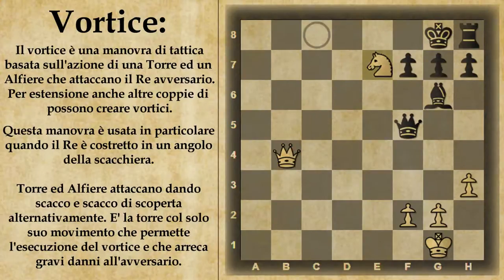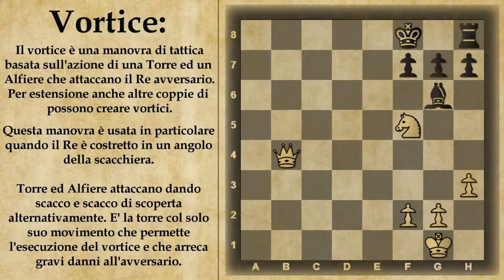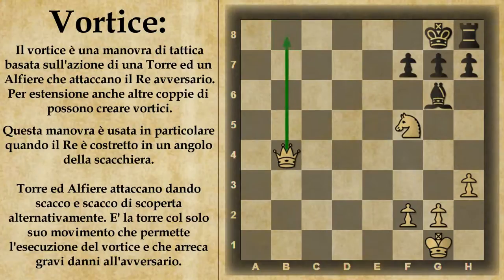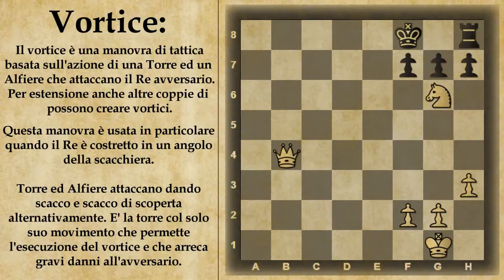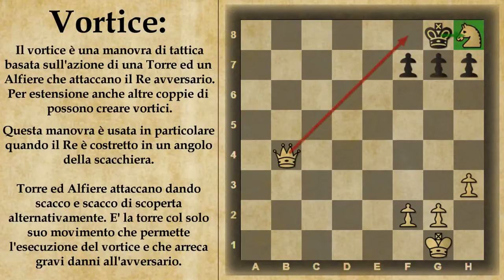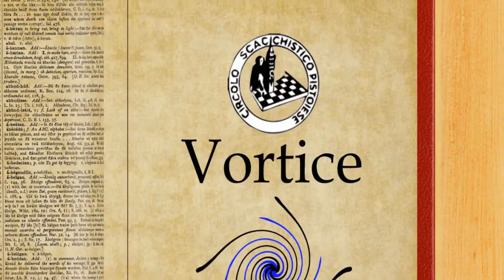Per risolvere questo problema il bianco dà uno scacco di scoperta con il pezzo mobile del vortice, in questo caso il cavallo, atto a rimuovere questa minaccia. Anche qui o il nero muove il re oppure frappone la donna: in ogni caso se frappone la donna la perde. Se muove il re, deve andare in g8 perché in e8 è matto. Segue la continuazione del vortice: il bianco dà un altro scacco, il nero è costretto a tornare in f8, e il bianco dà un altro scacco di scoperta spostando solo il cavallo. A questo punto il bianco ha due opzioni: può dare immediatamente scacco matto oppure continuare il vortice, dare scacco, scacco di scoperta, e far fuori anche la torre. Tra l'altro questo cavallo ora non può essere preso perché seguirebbe matto.